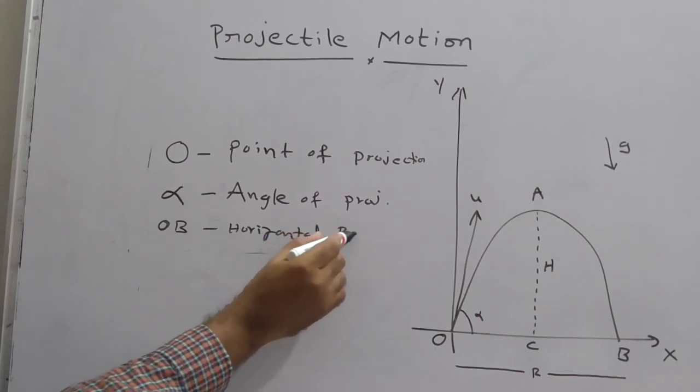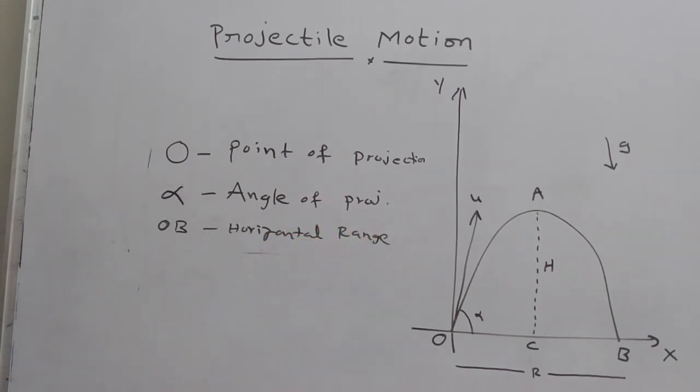What is AC? The AC is the vertical height or maximum height.